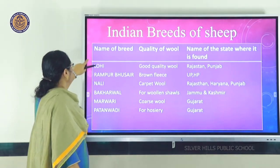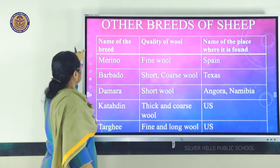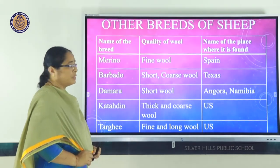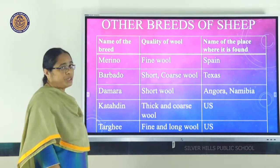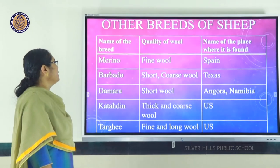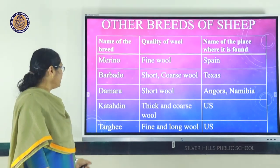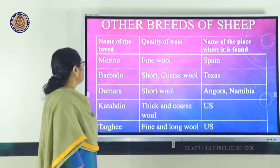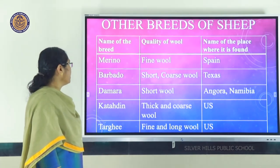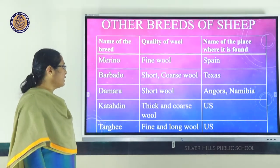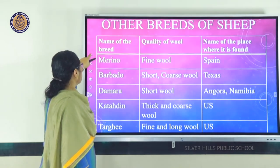Breeds found in different parts of the world include Merino from Spain, Barbado from Texas, Damara from Angola and Namibia, Kathadin from the United States, and Targi also from the United States. Merino sheep give fine quality wool. Barbado gives short and coarse wool. Damara gives short wool. Kathadin gives thick and coarse wool. Targi gives fine and long wool.